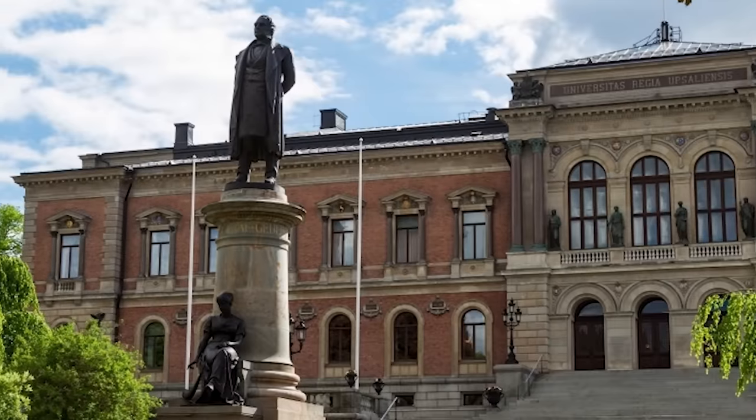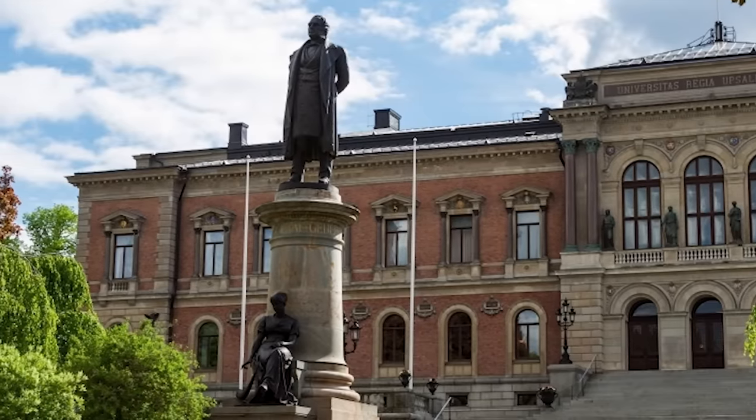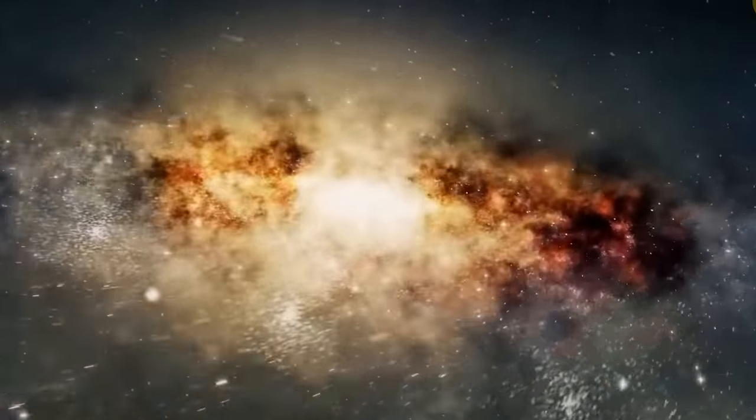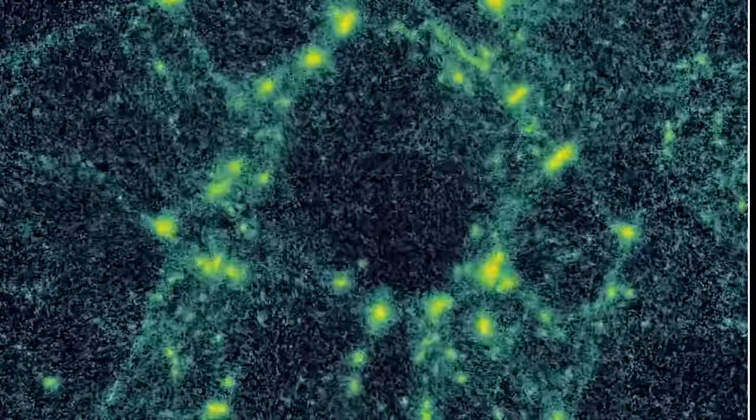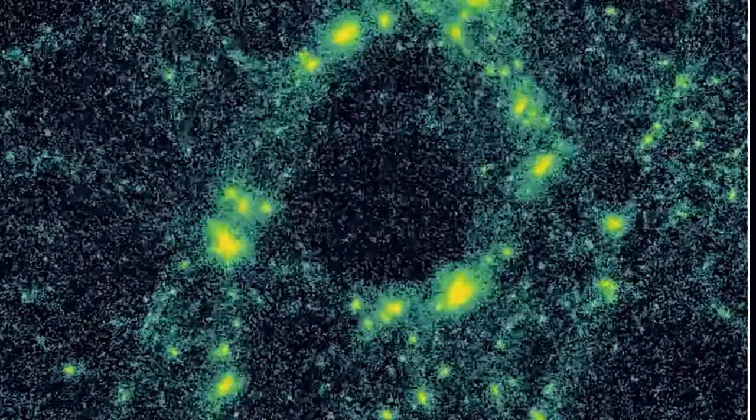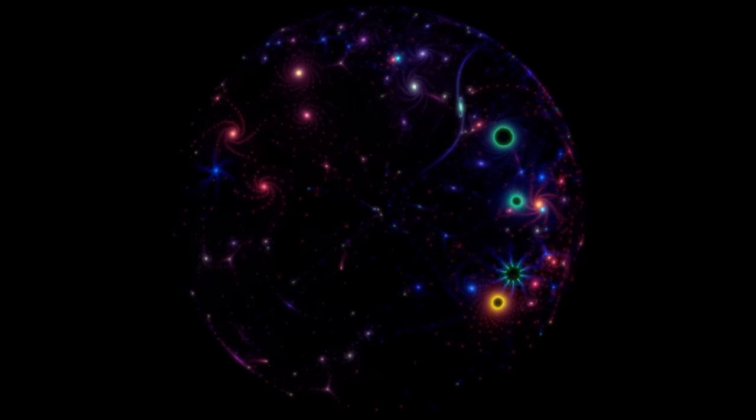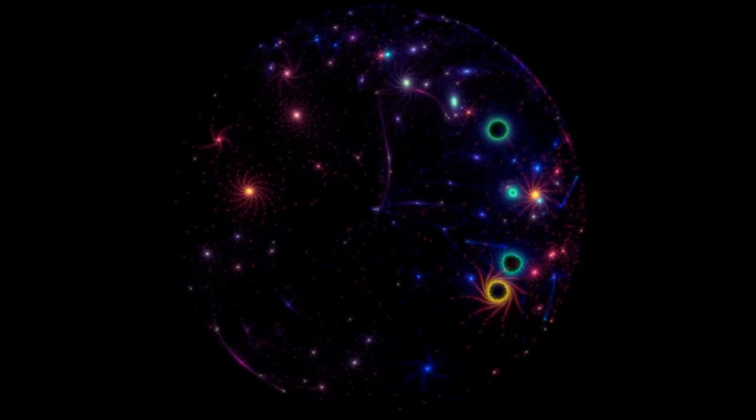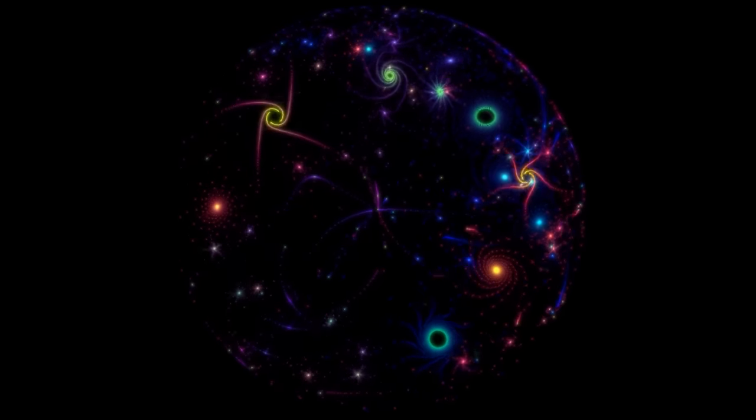In recent efforts to reconcile these disparities, researchers from Uppsala University in Sweden have proposed a variation within string theory. This novel perspective suggests that our universe might reside on the periphery of a perpetually expanding bubble, where everything familiar to us constitutes a small segment of a much larger cosmic structure. Within this bubble, and possibly extending beyond its limits, uncharted dimensions could exist, and the infiltration of dark energy from the broader bubble universe offers a potential explanation.